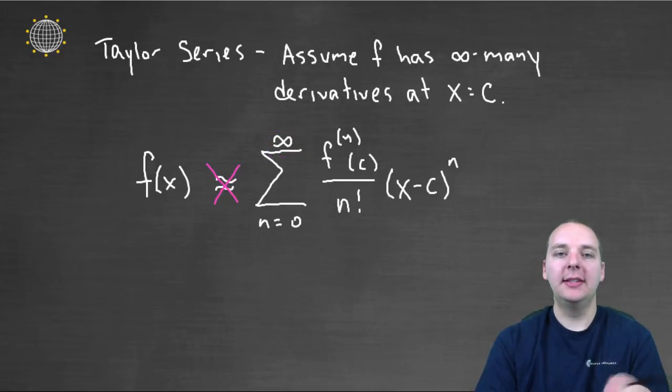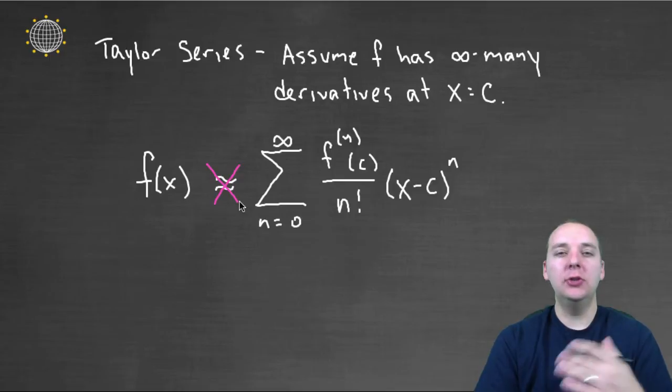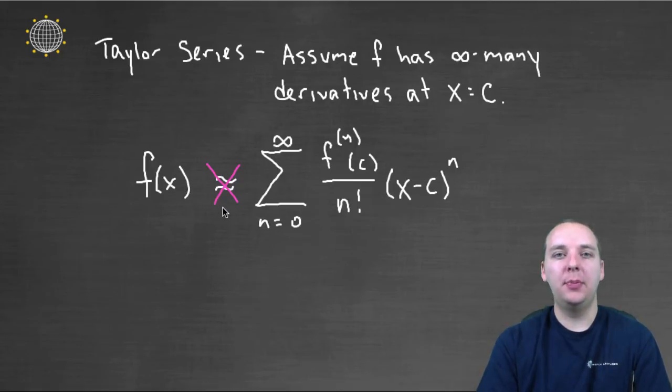Alright, now the cool thing about this is, it's not an approximation anymore. Because, you know, even if we had done a thousand terms, even though that would have been super, super accurate, and super, super approximates f super well, at the end of the day, it would still just be an approximation. A very, very good one, but still an approximation, these would not be equal.